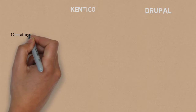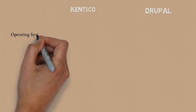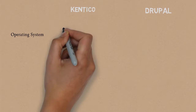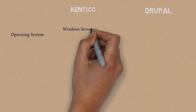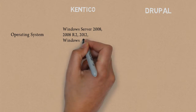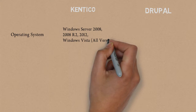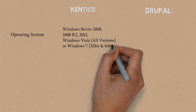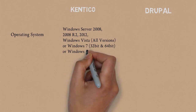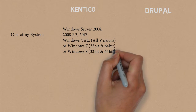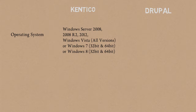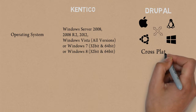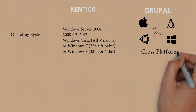Operating System: for Drupal, it is cross-platform. For Kentico, it is Windows Server 2008, 2008 R2, 2012, Windows Vista all versions, Windows 7, or Windows 8. For Drupal, it is cross-platform.